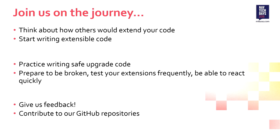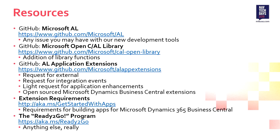Contribute to the GitHub repositories. The last slide has a bunch of resources, several of which are GitHub repositories: the development tools, the OpenCL library where you can interact with .NET, AL application extensions where we're starting to share our extension code publicly both so you can see what we're doing and so you can contribute back. Extension requirements shows what it takes to build an extension for Business Central and the Microsoft Cloud. The ready-to-go program is another place to look at documentation to get started. We're very active on those sites - if you're active there you should get feedback within a couple of days generally.